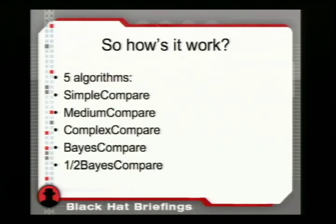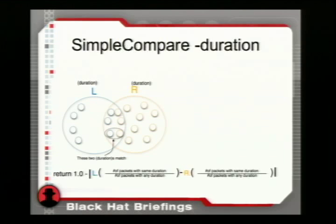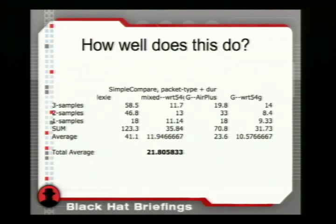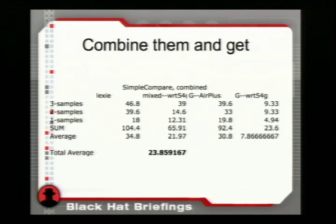How does it work? I have five algorithms; I'll briefly cover one. You look at the duration values you see, treat them as a set, take the intersection, subtract the probability of seeing them from each other, and return one minus that. If card A uses a given duration value 100% of the time and card B uses it never, they clearly differ. This approach gives 10 times better than random results. Accounting for packet types at the same ratios gives 21 times better than random — well past chipset-level resolution and into device driver identification. Combining both techniques gives 23 times better than random, identifying the right chipset, device driver, and probably the version.